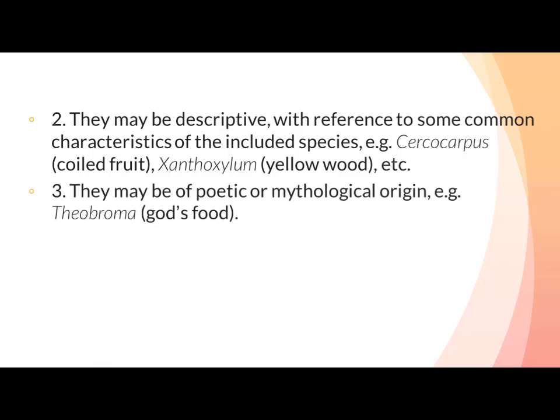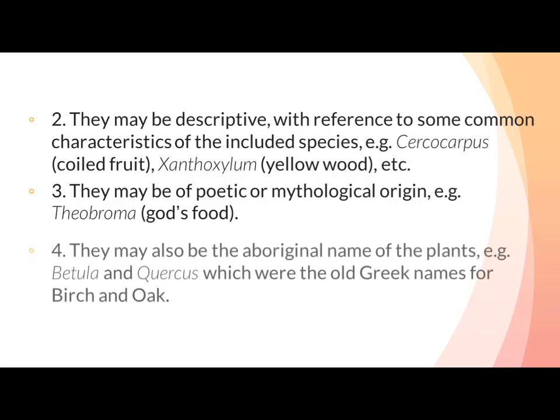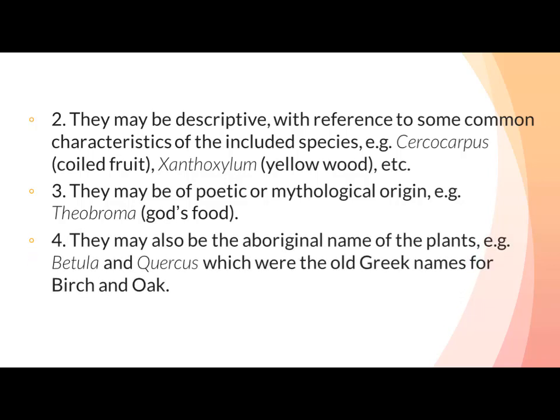Third, generic names may be of poetic or mythological origin — for example, Theobroma means 'god's food.' Fourth, they may also be the aboriginal name of the plants. For example, Betula and Quercus were the old Greek names for birch and oak, and we have given these genera names on the basis of those old Greek names.